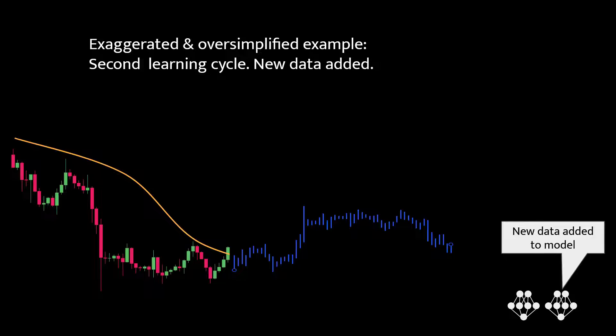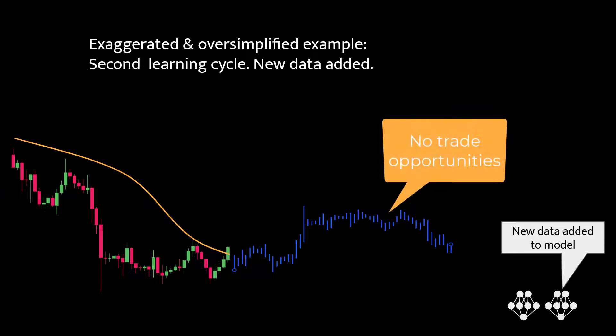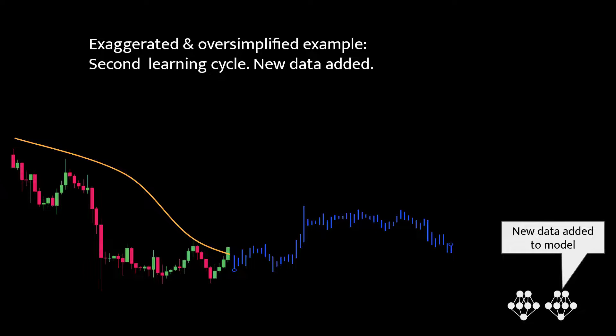Now we have even more candlestick information. The model considers this data and suggests that prices might stay within a neutral range. And in such a scenario it might not be ideal for a long trade, as the market is expected to remain stable.